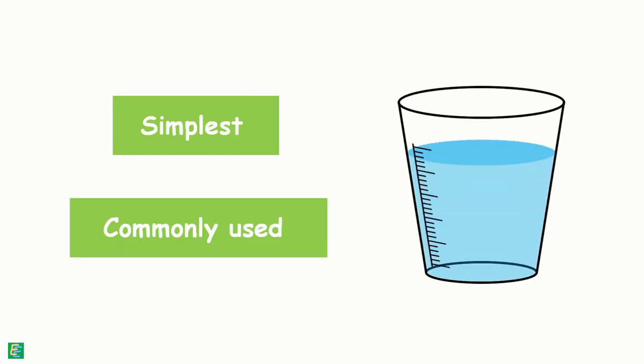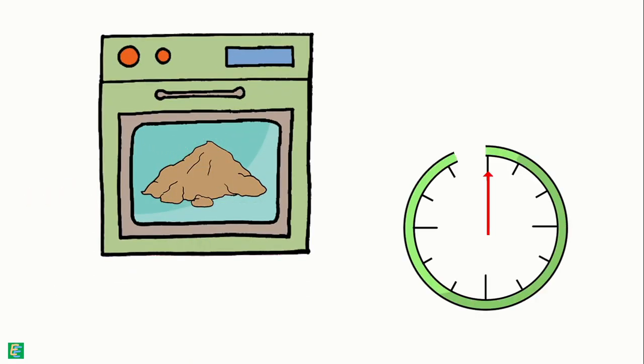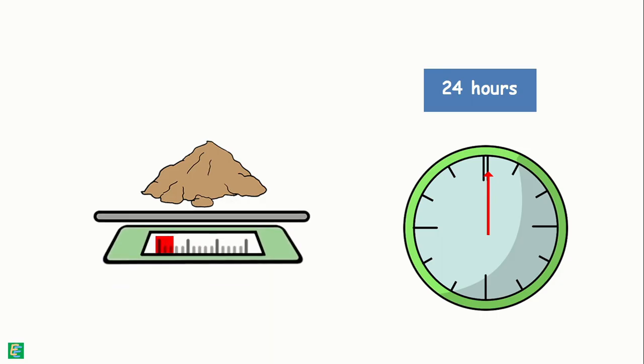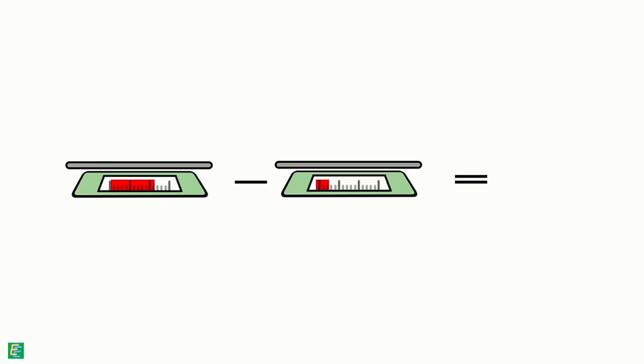The procedure is very simple. Just take out a small soil sample, take its weight, and put it into the oven for 24 hours, then take it out and take its weight again. The difference in weight will be the weight of water present in the soil sample.